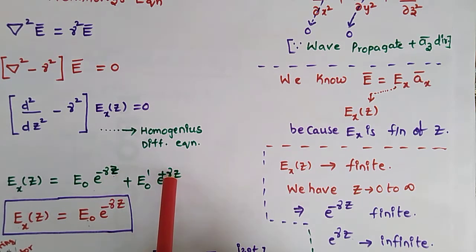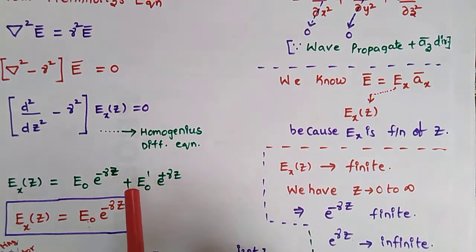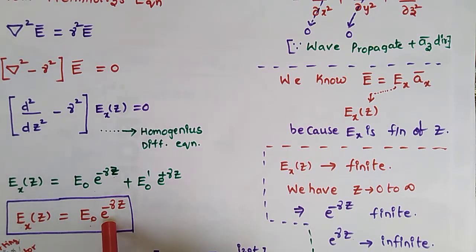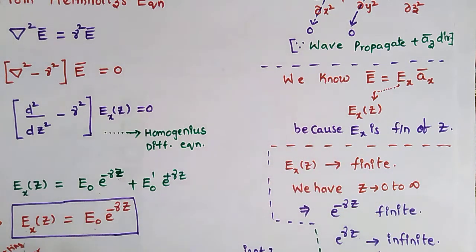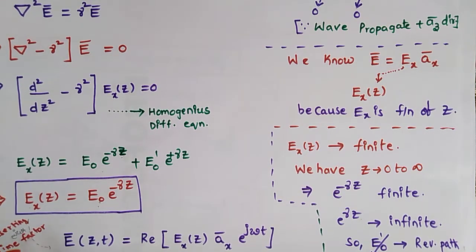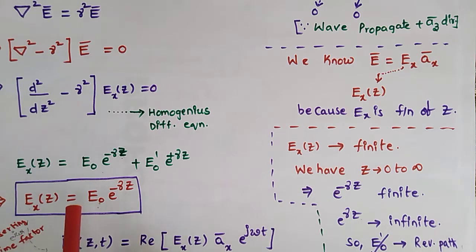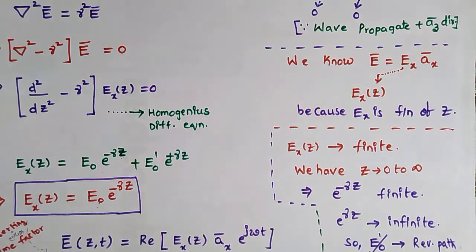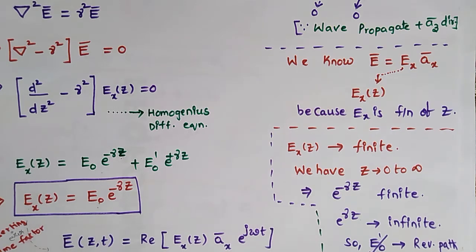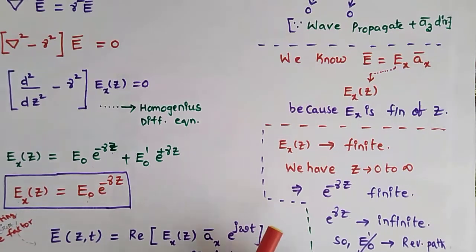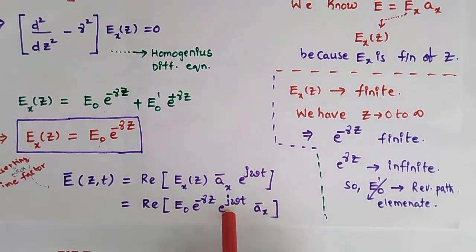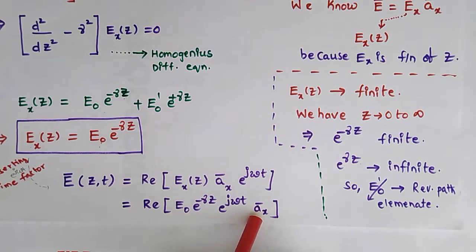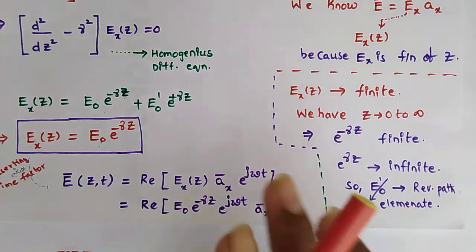Since z varies from 0 to infinity, if we substitute infinity, the term e^(+γz) becomes undetermined, while e^(−γz) gives a finite value. So we discard the positive root term. The wave is a function of both space and time, so we insert the time-harmonic factor e^(jωt). The complete electric field solution is: Ex(z,t) = Re[E₀ · e^(−γz) · e^(jωt)] in the ax direction.